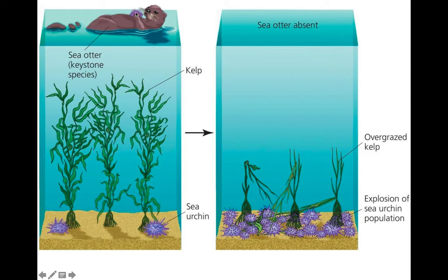Sea otters eat purple sea urchins, and sea urchins eat kelp forests. So sea otters keep the sea urchin population in check. Organisms near the top of the food chain are very important — they keep the populations below them in check. Without sea otters, sea urchins are not in check; they reproduce and take out the entire kelp forest. So the absence of sea otters destroys the kelp forest, making them a big player in this environment — a keystone species.